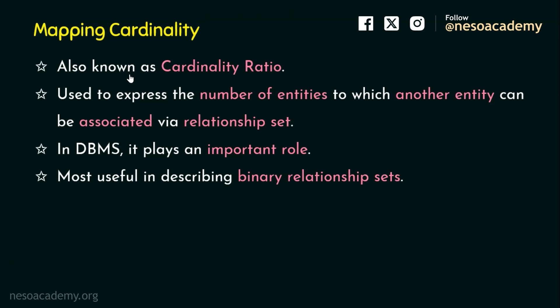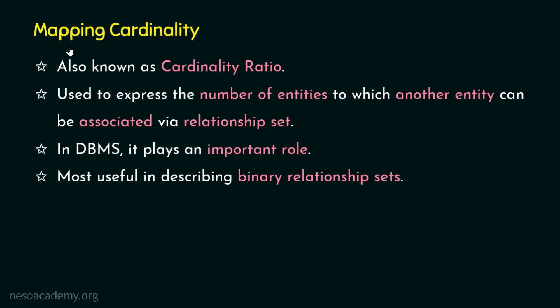Mapping cardinality is also known as cardinality ratio. It is used to express the number of entities to which another entity can be associated via a relationship set. It is a way of specifying the design, because in the design phase only we are going to determine this — specifically the maximum number of relationships an entity can be engaged in. In DBMS, complex design can be simplified with the help of mapping cardinality by specifying the cardinality ratio.